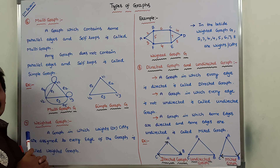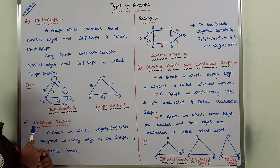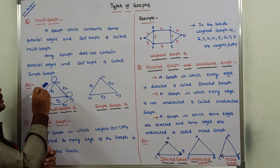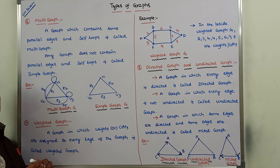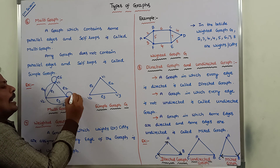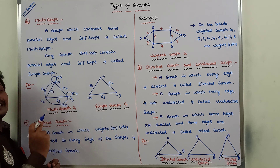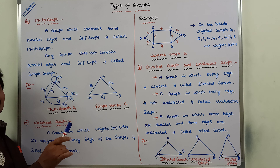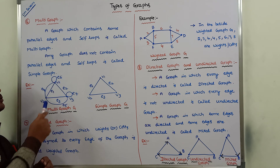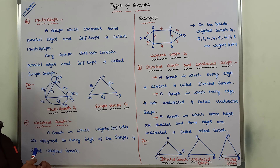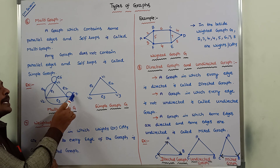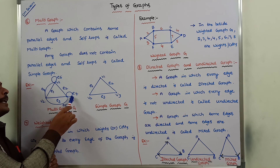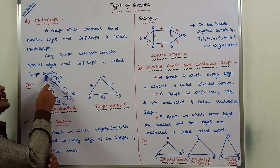Now consider vertex V1. V1 is connected to V1 by using a loop, and that loop is called as self-loop. That means V1 is connected to itself by using a single edge. For example, E6 connects V1 to V1 — that is called a self-loop. Similarly, V3 is connected to V3 by using edge E7. Hence, V3 contains a self-loop and V1 contains a self-loop.